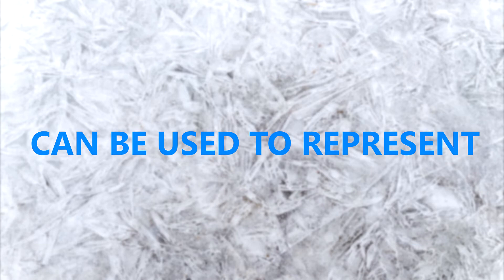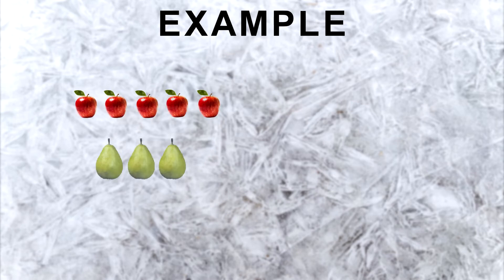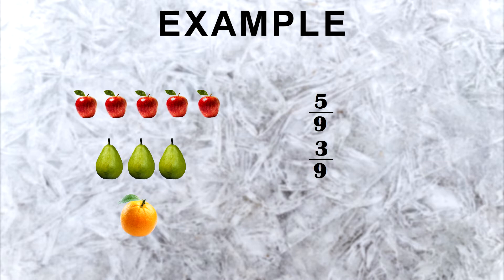Alright, so we have seen how fractions can be used to represent parts of objects like circles, rectangles, and other geometrical figures. But fractions can be used for more than that. They can be used to represent anything. Like take an example of fruits. So if we have total 9 fruits, 5 apples, 3 pears, and 1 orange, we can say 5 ninths of the fruits are apples, 3 ninths of them are pears, and 1 ninth of them are oranges.